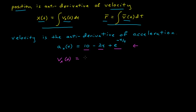The antiderivative of 10 is 10t with respect to time. The antiderivative of negative 2t is minus t squared. And the antiderivative of e to the negative t over 4 is equal to minus 4e to the minus t over 4. I can quickly check by differentiating each of these in my mind to make sure I reproduce my acceleration. I need this minus 4 so that when I differentiate it, the negative 1 over 4 cancels and I get my positive 1 back.